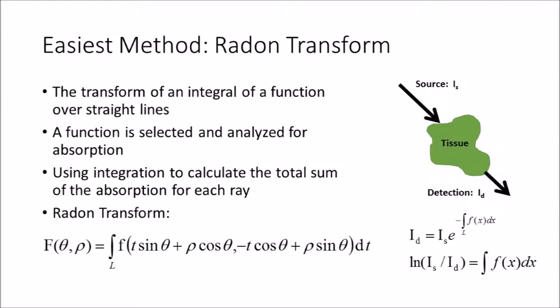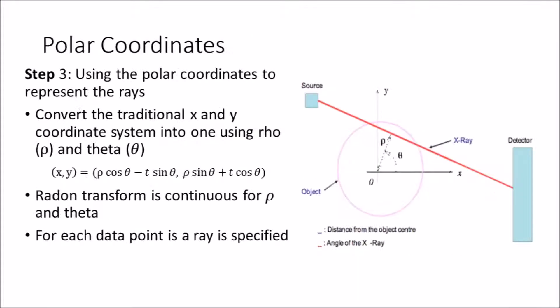Radon Transform is an integral transform over straight lines that analyzes a function for absorption. After calculating the total absorption of the rays passing through the object, the polar coordinates of the absorption is found. The first step in completing this process is converting the traditional X and Y coordinate system into another system using rho and theta through a simple conversion factor, where rho will approximate the distance from the center of the object and theta will represent the angle made between the positive X axis and the circumference of the object.